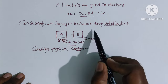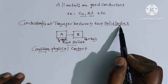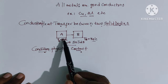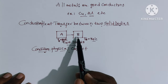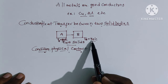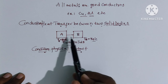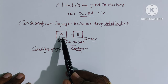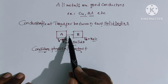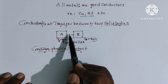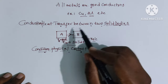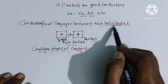Conduction heat transfer between two solid bodies requires physical contact. Without physical contact, heat will not transfer between two solid bodies. Here, body A is at 80 degrees Celsius and body B is at 30 degrees Celsius. Without physical contact, heat will not transfer. With physical contact only, heat will transfer from body A to body B by virtue of the temperature difference.